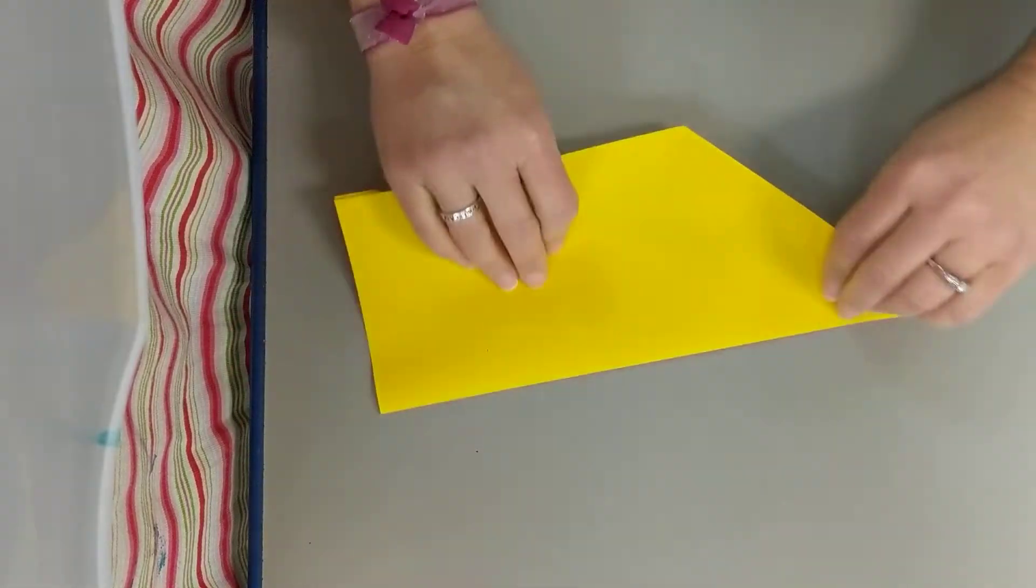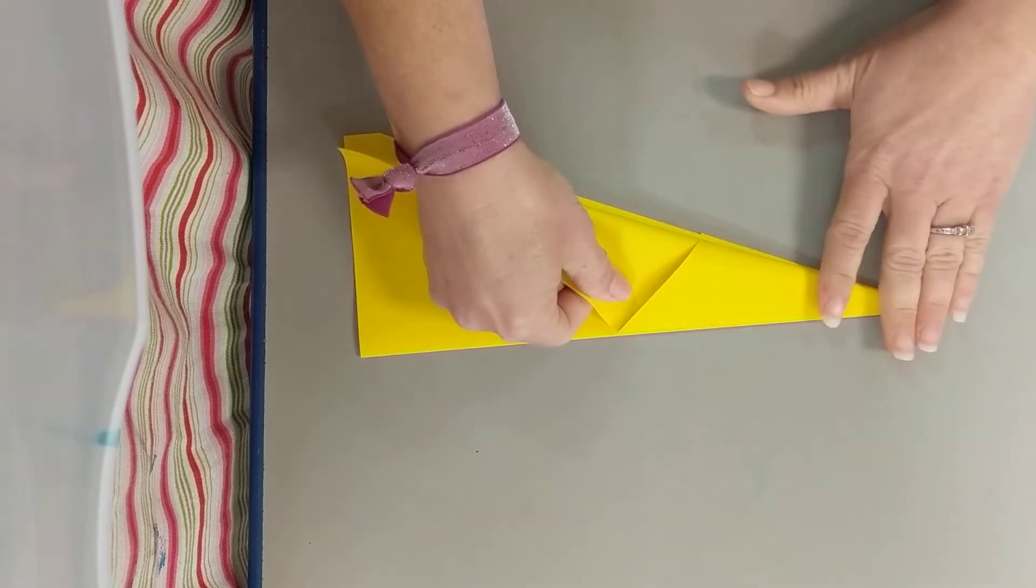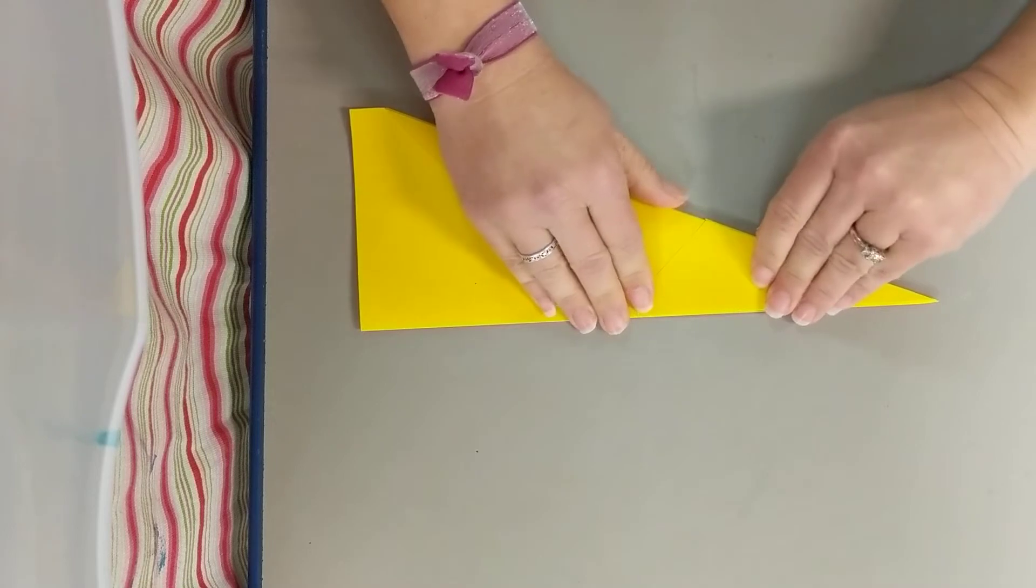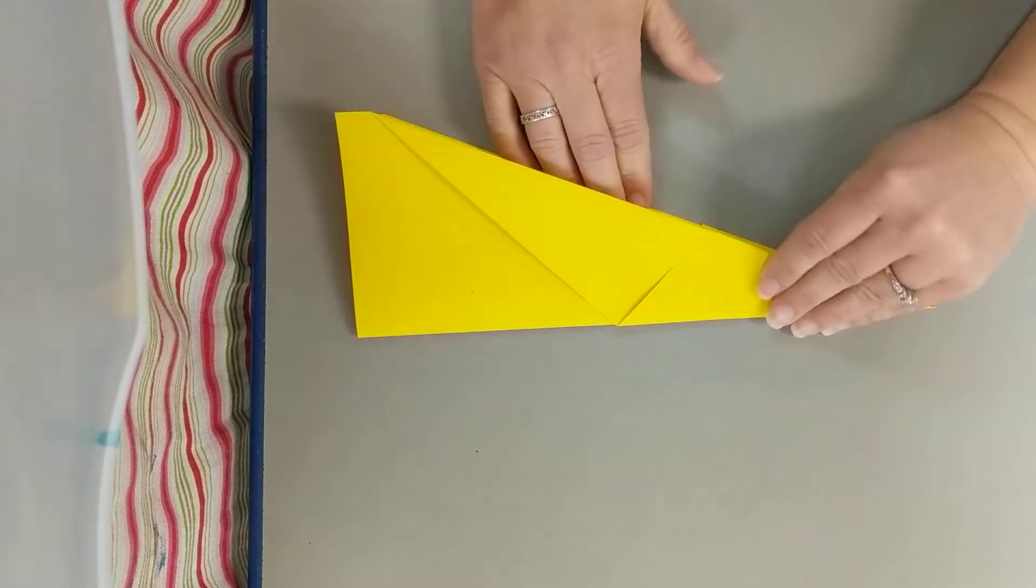Then you're going to fold - here's your middle - fold this down to match that side again. You still have the front pointy side.